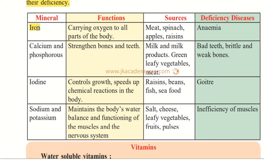The first mineral is iron. Its function is carrying oxygen to all parts of the body — the blood gets oxygen from the lungs and supplies it to various parts of the body. Sources of iron include meat, spinach (called palak in Hindi), apples, and raisins (which are dry grapes). If we don't have enough iron, we will suffer from anemia.